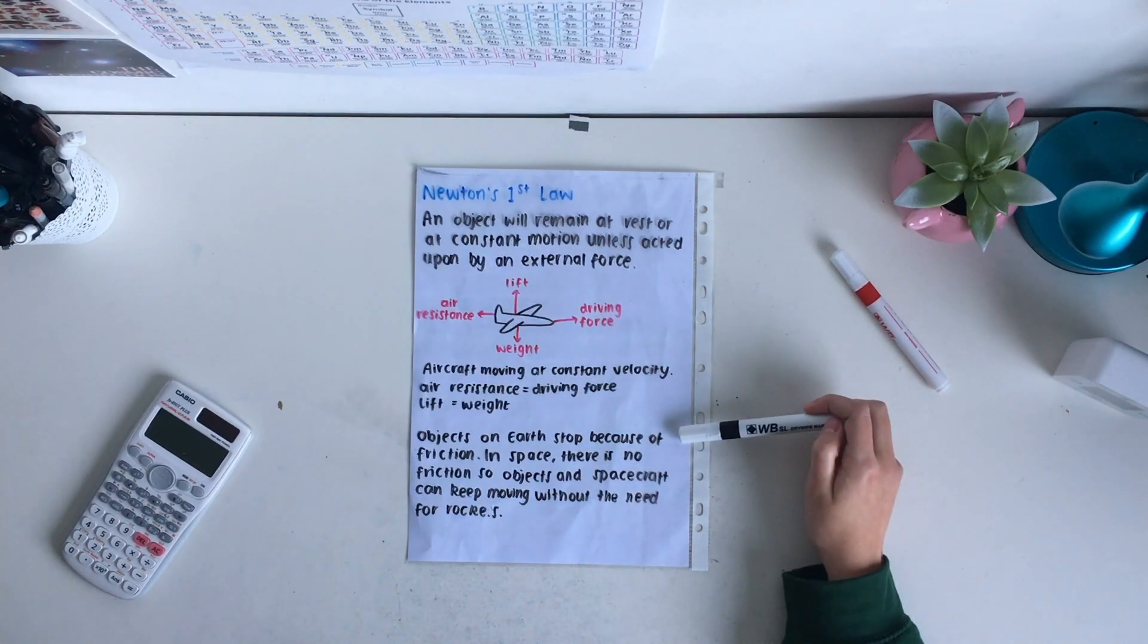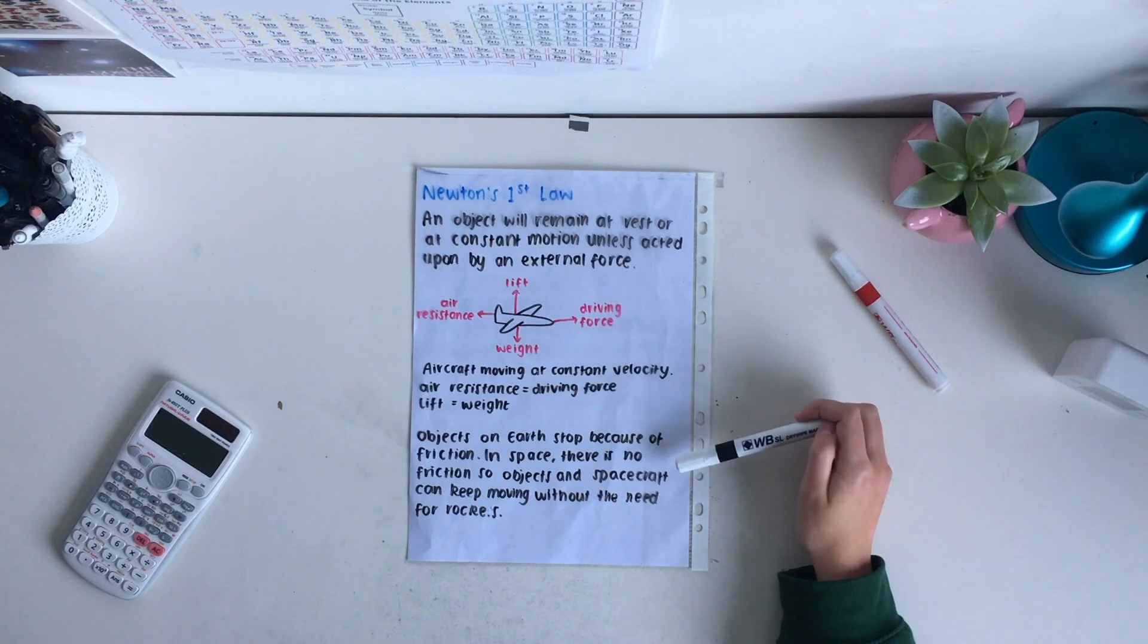Objects on Earth stop because of friction. When you roll a ball, you expect it to stop. In space, there is no friction, so objects and spacecraft can keep moving without the need for rockets.